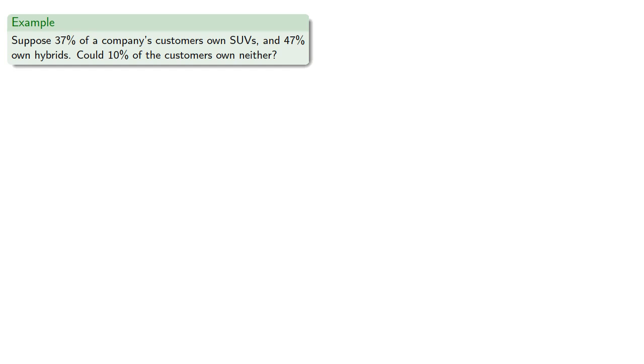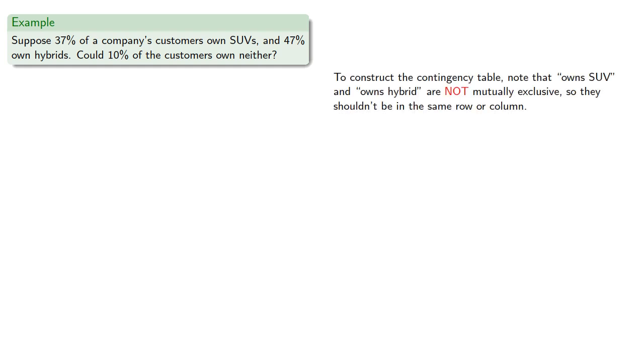We can do the same thing if we have percentages. For example, suppose 37% of a company's customers own SUVs, and 47% own hybrids. Could 10% of the customers own neither? To construct the contingency table, note that owns SUV and owns hybrid are not mutually exclusive, so they shouldn't be in the same row or column.